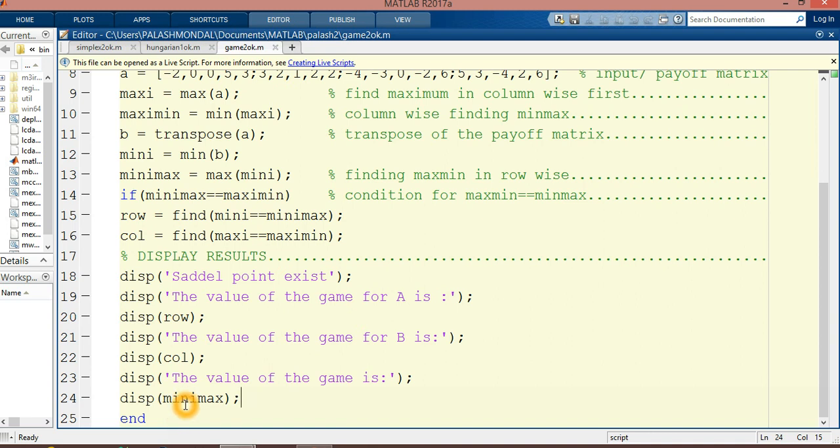Is this strictly determinable game or not? We can say that in the condition of strictly determinable game, the max-min is equal to min-max is equal to the value of the game. Then we can say the game is strictly determinable. In this case, the value of the max-min and the value of the min-max and the value of the game is same. So we can say this game is strictly determinable.